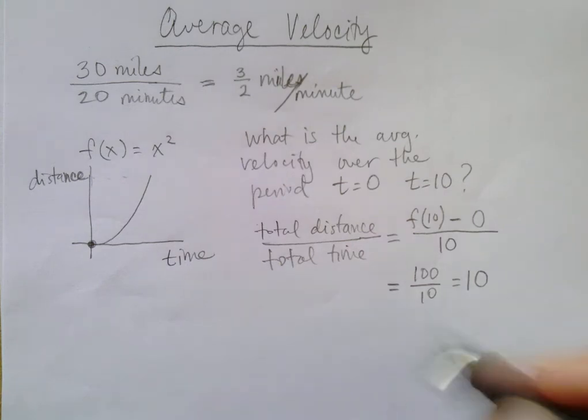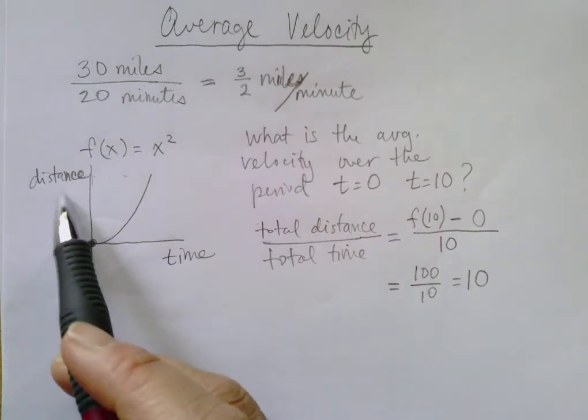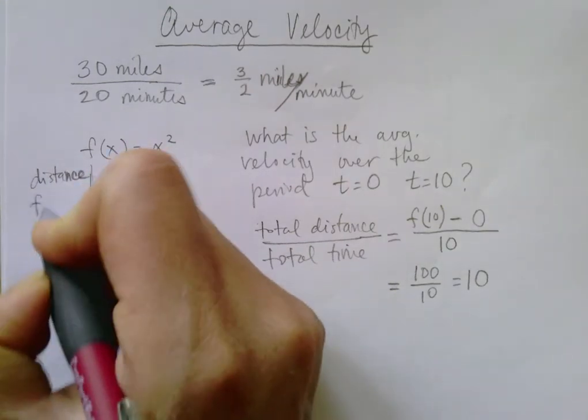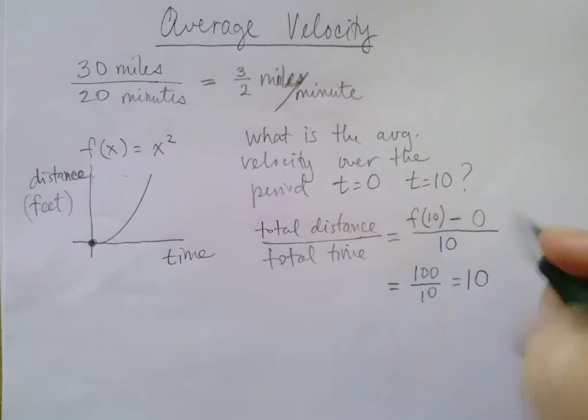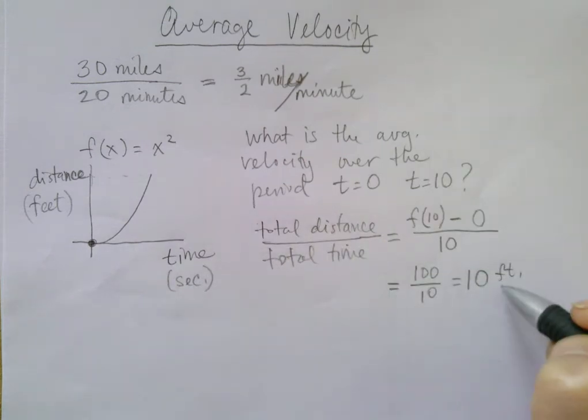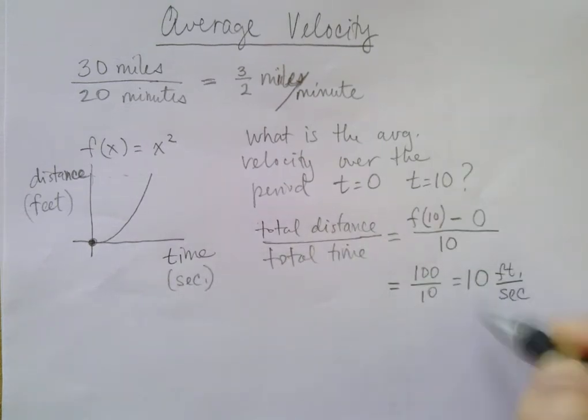Now I didn't give you the distance increments. So this could have been, let's say, feet, for example, in which case this would be feet. And I didn't give you the time increments. Let's just say in this case it's seconds. Then you would have 10 feet per second.